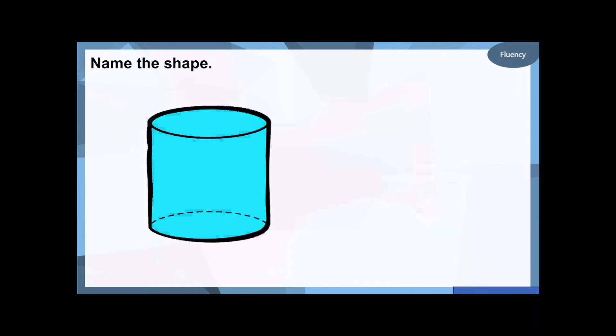Okay, this next shape. See what you've remembered. It's the same shape as like a can or a tin. It's got a circle face on the top, circle face at the bottom, and then one big curved side all the way around. Another little clue: begins with a C sound. Well done if you said it's a cylinder.